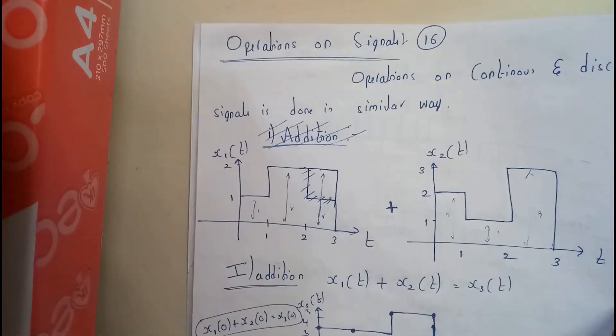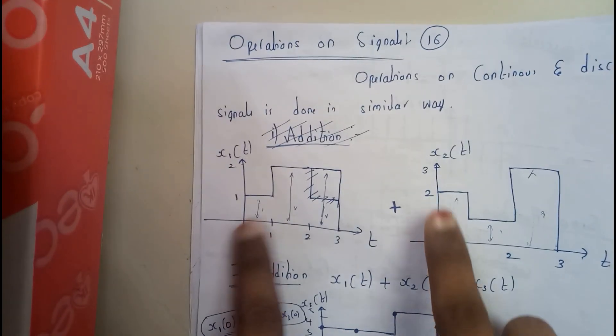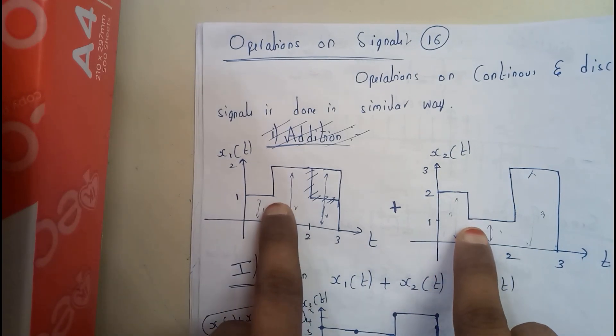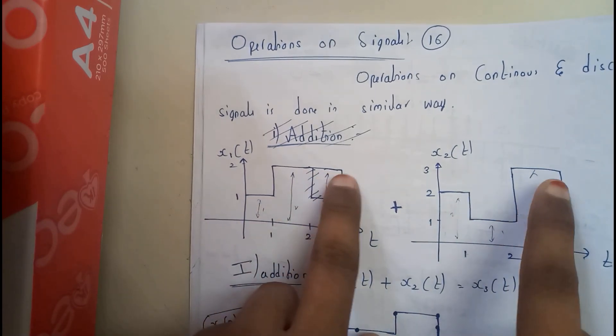So I hope everyone is now clear with addition. Addition is nothing but adding the individual points - these two addition, then these two addition, then these two addition. That's it, you'll be getting a new graph.